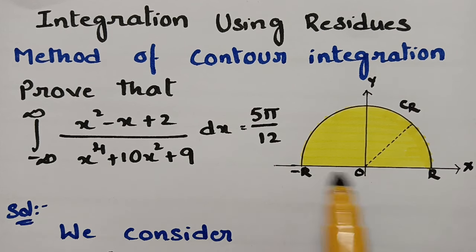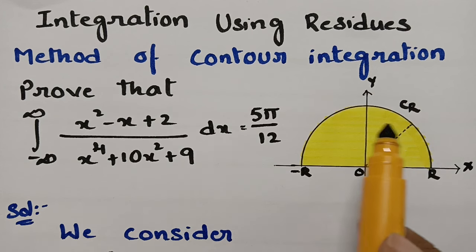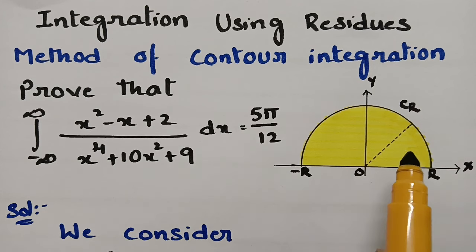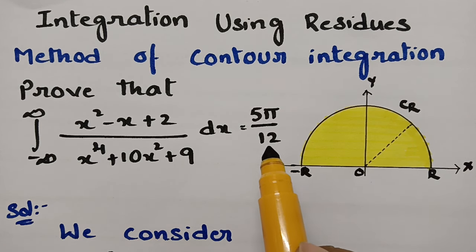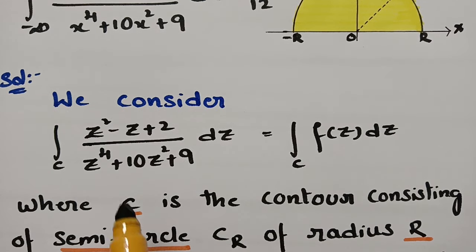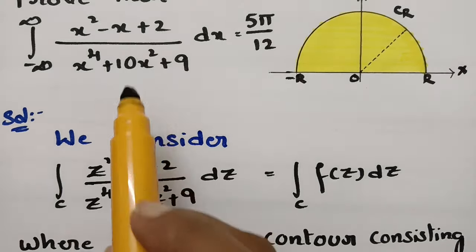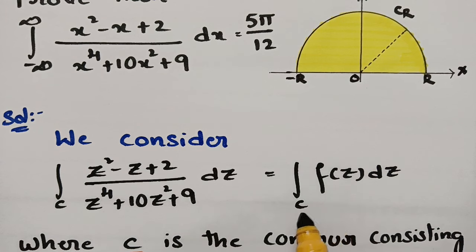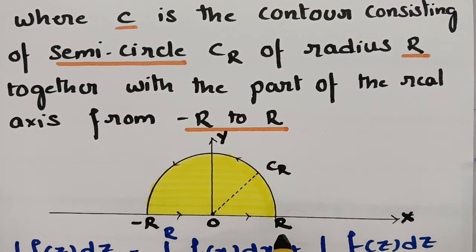So this is the contour — it is a semicircle. It has limits from minus r to plus r, and C_r is a semicircle with center 0 and radius r. We transform the variable from x to z. That is, the integral of (z² - z + 2)/(z⁴ + 10z² + 9) dz is equal to the integral over contour C of f(z) dz, where C is the contour consisting of the semicircle C_r of radius r together with the real axis from minus r to plus r.